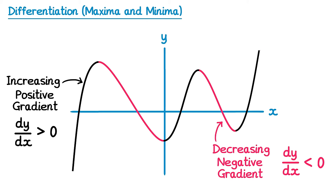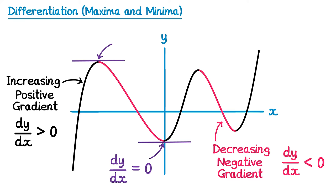But what about the points where it switches from positive to negative, or from negative to positive? Right at the top of the curve or right at the bottom of the curve — if you draw a tangent to these, the tangent will be completely horizontal. Therefore the gradient is 0, so dy by dx must equal 0. These points are given a special name — we call them stationary points.